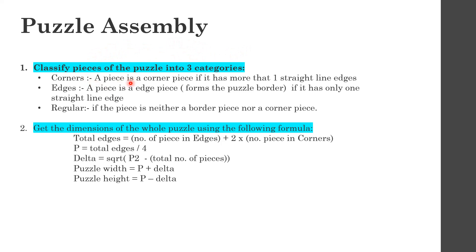The first step of puzzle assembly is classifying pieces into three categories. A corner piece has more than one straight-line edge — generally two straight-line edges. An edge piece always has one straight-line edge, and the remaining pieces are regular pieces. We also verify that exactly four corner pieces are detected to confirm the puzzle is valid; otherwise the algorithm stops.